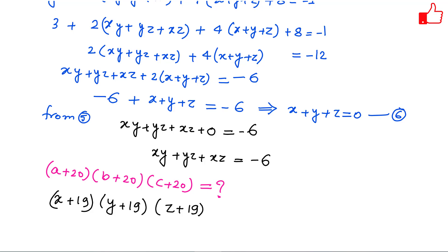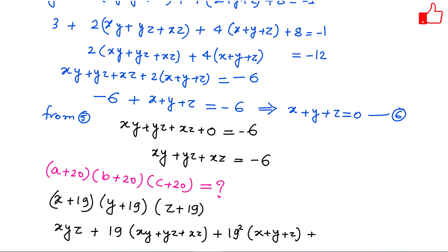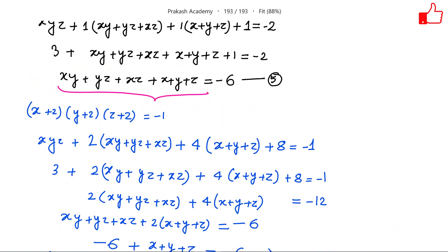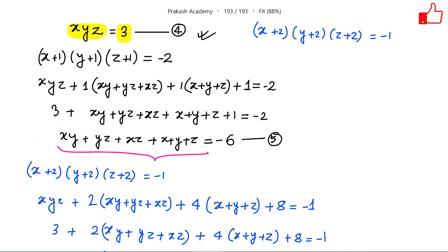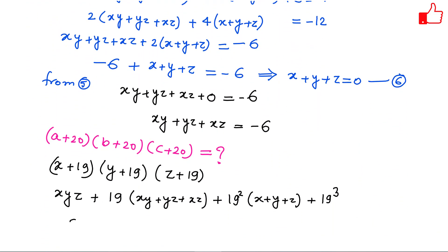In terms of x, y, z this becomes (x+19)(y+19)(z+19). Expanding using the formula with k=19: xyz + 19(xy + yz + xz) + 19²(x + y + z) + 19³. We know xyz = 3, xy + yz + xz = -6, and x + y + z = 0.